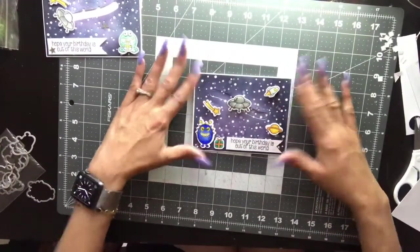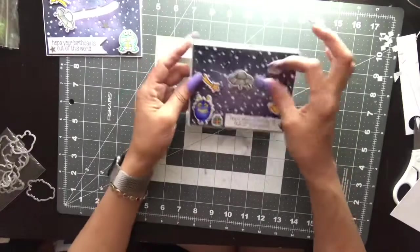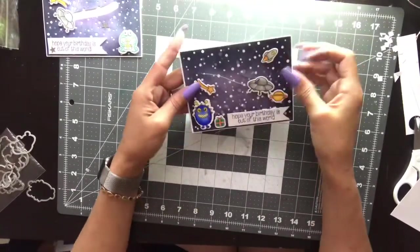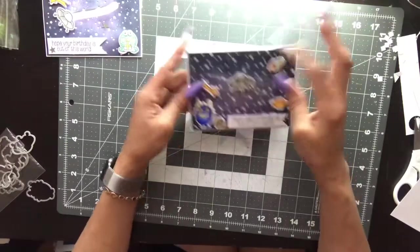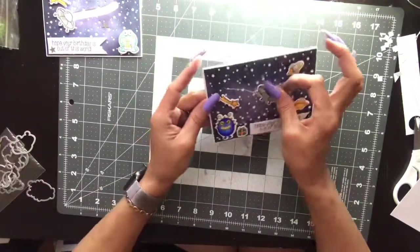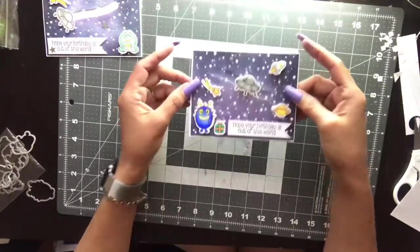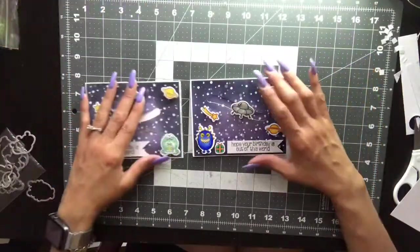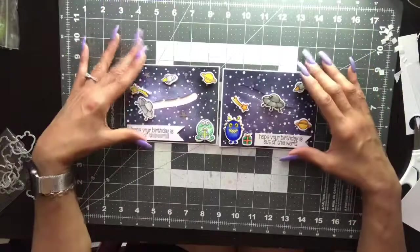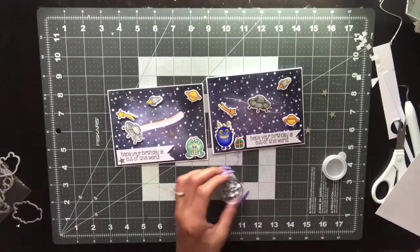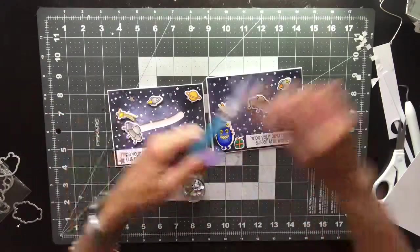This is where I decided to add some stars, silver stars that I had in my stash. I also decided to add some googly eyes to the monster like I did on the first one. I thought that this card would be cute for a child, a little boy in particular.